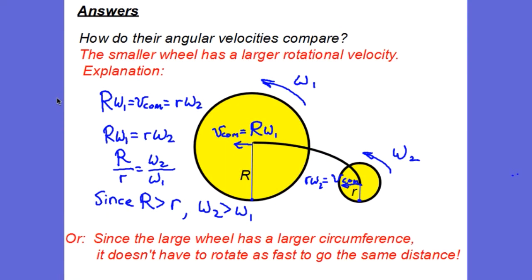For the angular velocities: VCOM for each wheel equals the radius times its angular velocity. Since VCOM is the same for both wheels, rearranging gives a proportionality where if the radius of the big wheel is larger than the radius of the small wheel, then omega of the small wheel must be a bigger number than omega of the large wheel. In other words, since the large wheel has a larger circumference, it doesn't have to rotate as fast to cover the same distance.